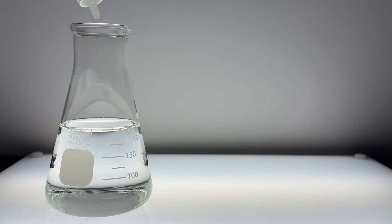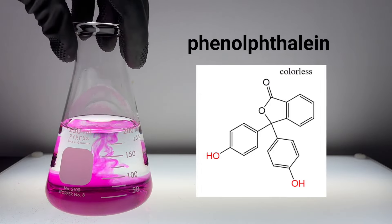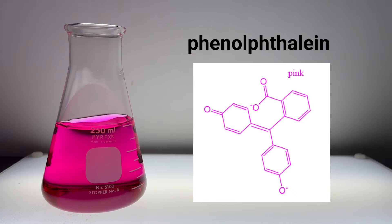This solution contains another acid-base indicator called phenolphthalein. Phenolphthalein undergoes the same type of chemical transformation as thymolphthalein. However, phenolphthalein turns a magenta color in the presence of base. But check this out.